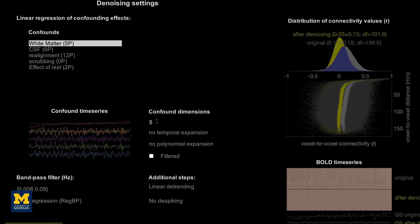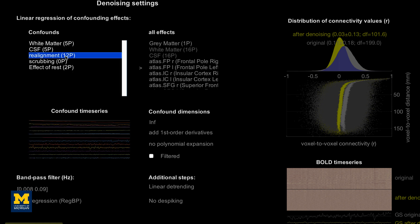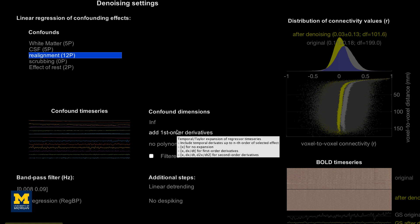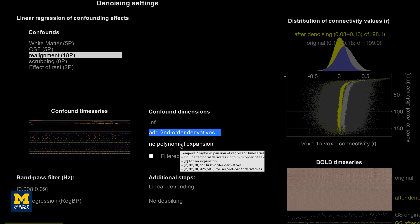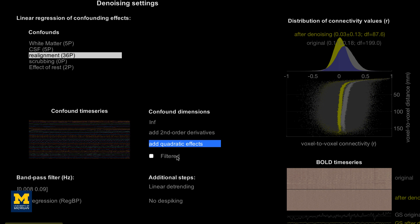Within this panel, you can also choose to add higher order derivatives. If this is done at all, it is usually done to the motion regressors specified here under realignment. For example, first and second order derivatives can capture more subtle movements that are not accounted for by the traditional translations and rotations. Polynomial expansion is a similar concept, adding either a quadratic or cubic exponent to the regressor, although this is not commonly done. For now, I'm going to reset these back to their defaults.